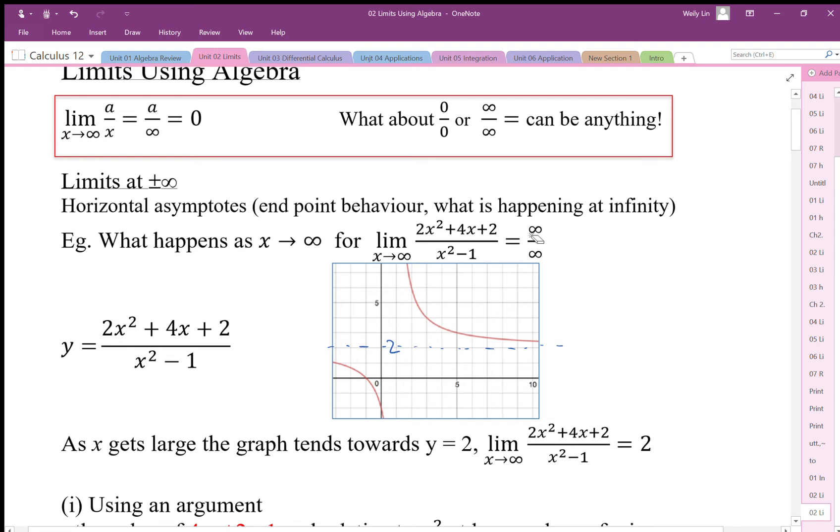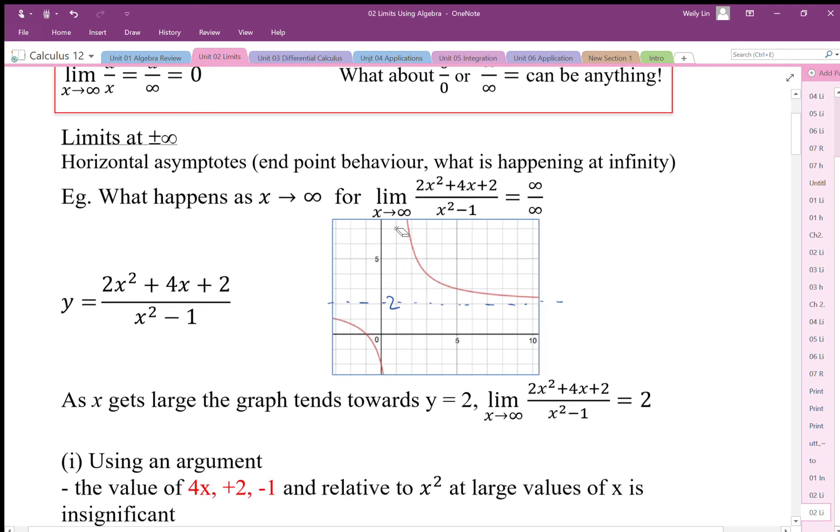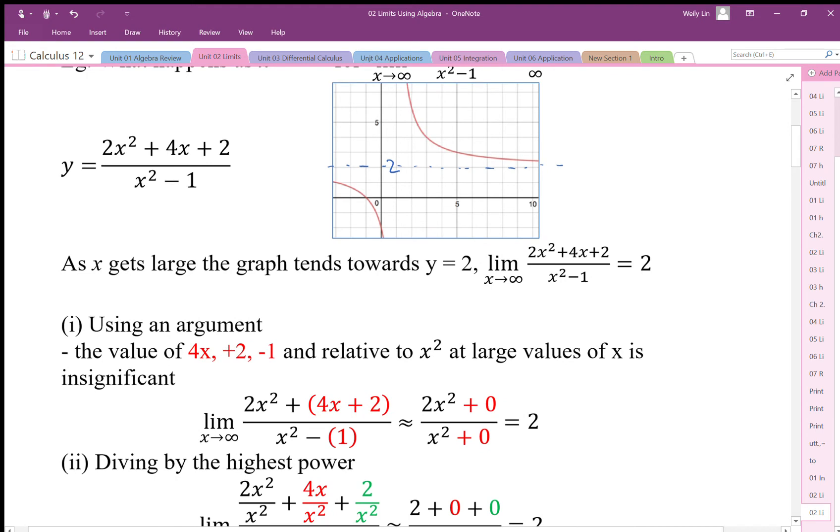In this case it appears that our ∞/∞ is equal to 2. From the graph we're going to claim that this is the case and this is what limits are - it looks like it's headed towards 2. But what is the algebraic strategy to do this?